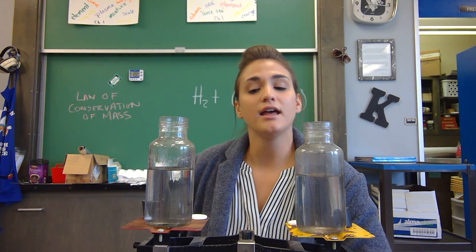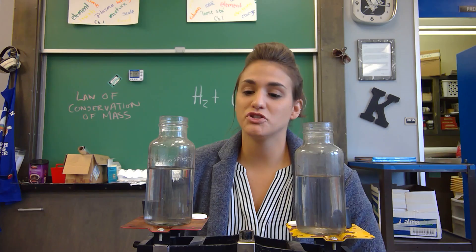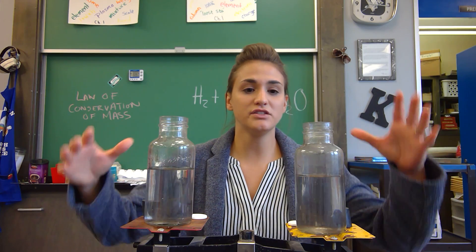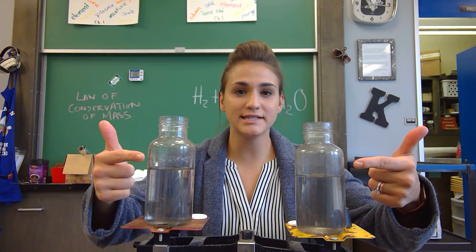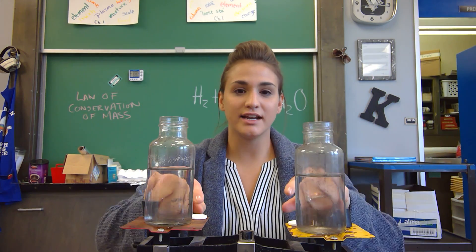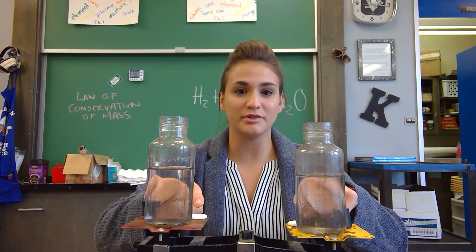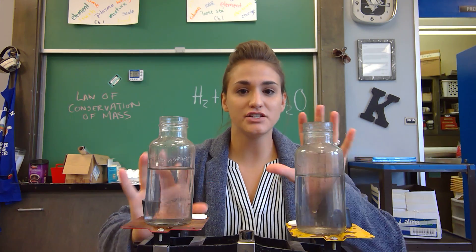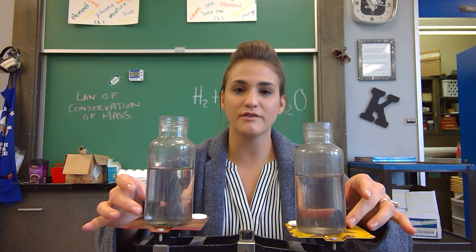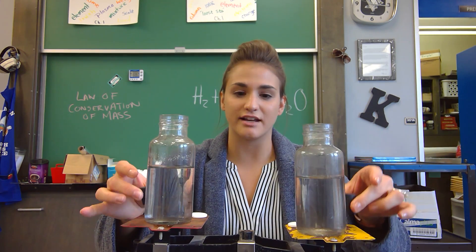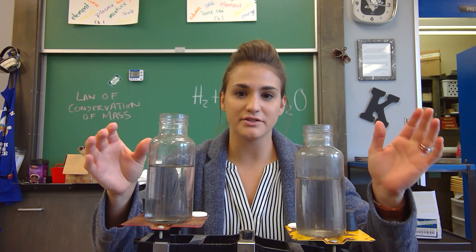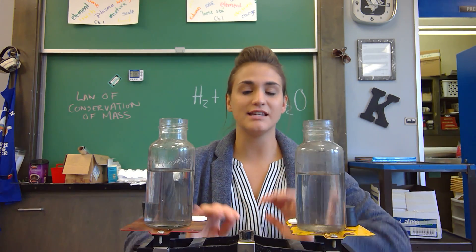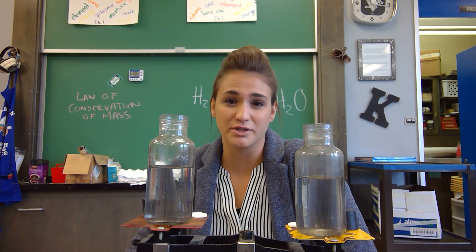Today I'm showing you these two Boston bottles with water inside them. An effervescent tablet is on each side of this balance. They also have corks on each side of the balance so that it keeps things even and they're not leaning in one particular direction.